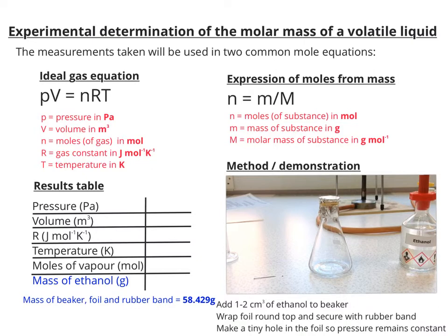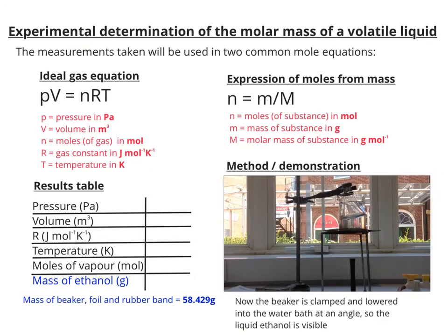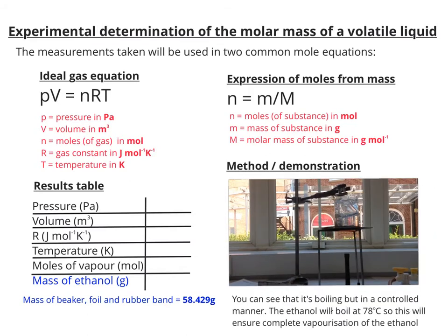You can see it's boiling, but in a controlled manner. The ethanol will boil at 78 degrees C within the small beaker, so the complete vaporization of the ethanol will enable us to take measurements whilst it's a gas.